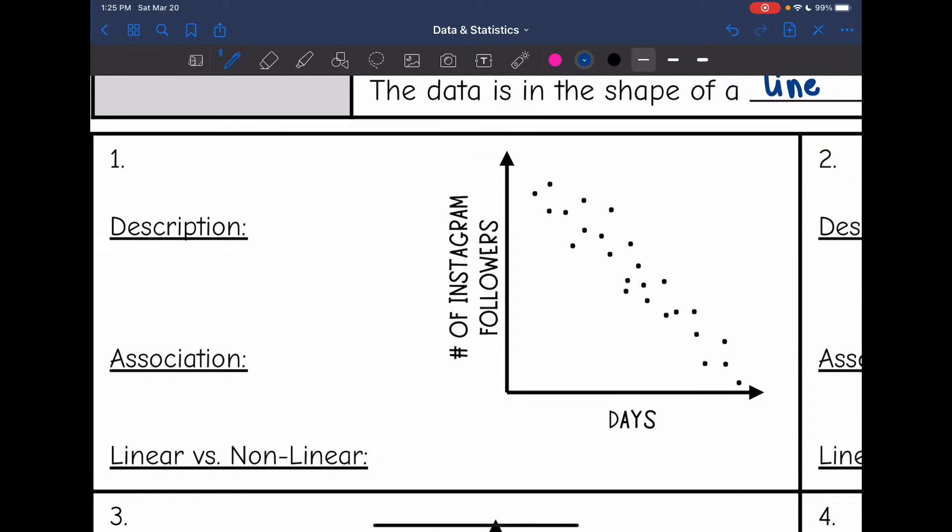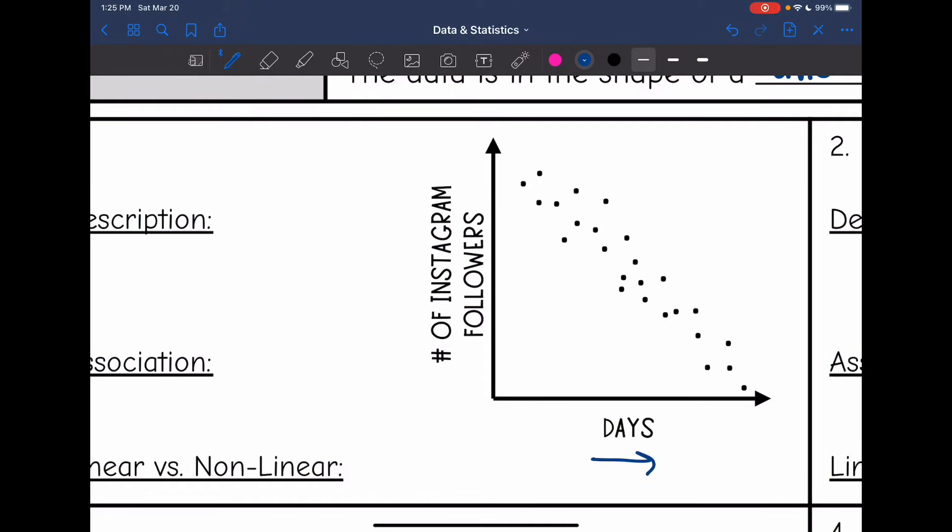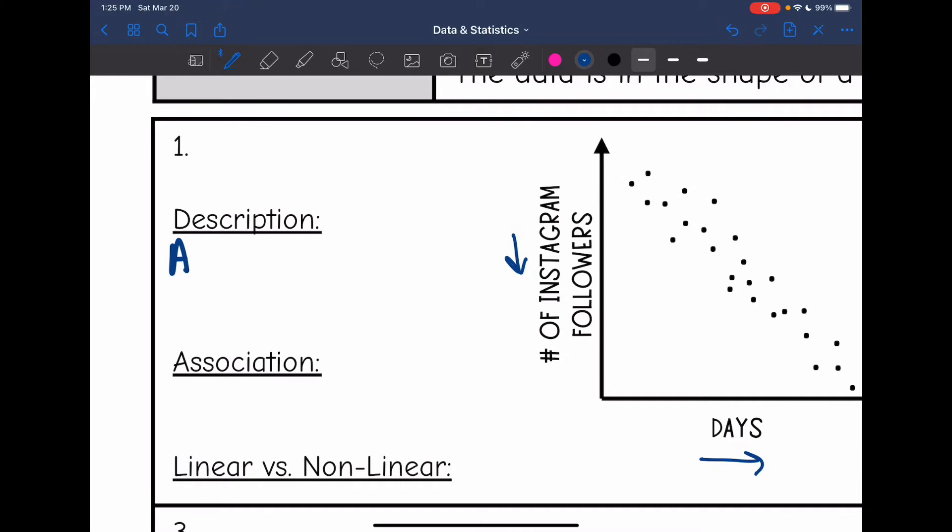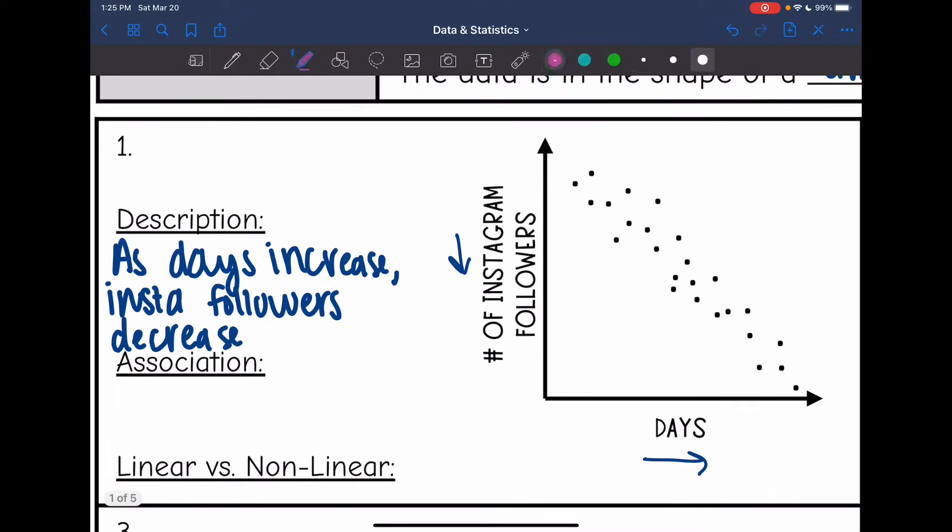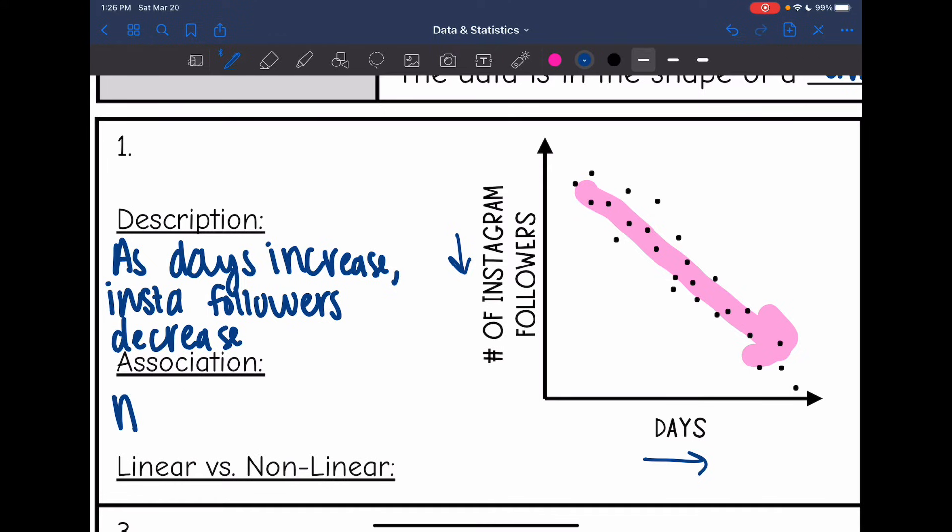So this first one, as my days increase, my Instagram followers are going down. So as the days increase, the Instagram followers decrease. As you can see, this data is going down. So we would say that this is a negative association. And then in general, this is in the shape of a line. So we would say that it is linear.